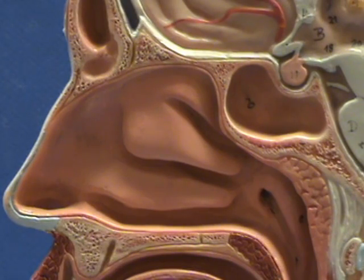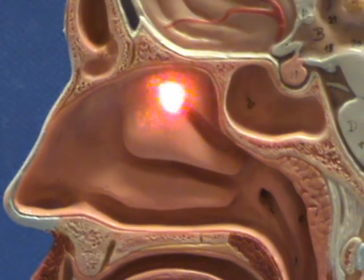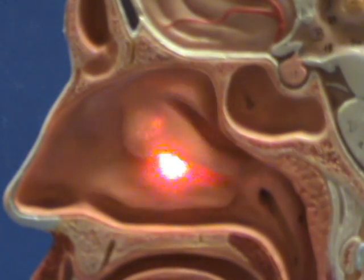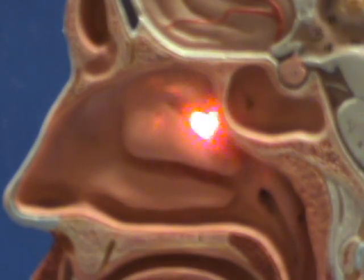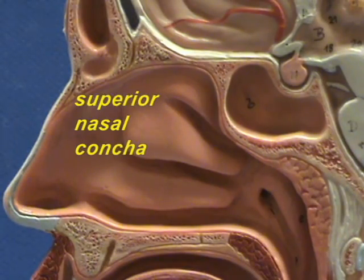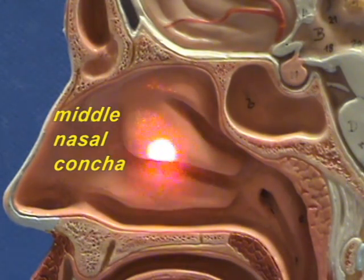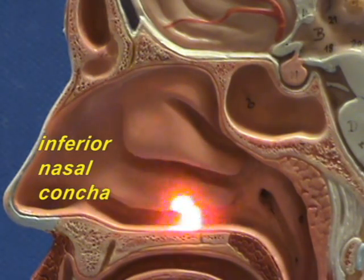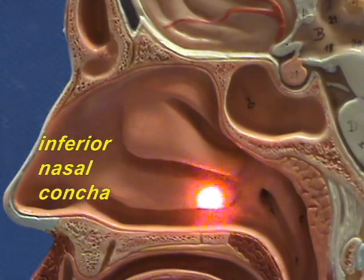Each of these shelf-like extensions is referred to as conca. You have three conca here. This small one up in the back is the superior nasal conca. Then you have the middle nasal conca right here, and then the inferior nasal conca.